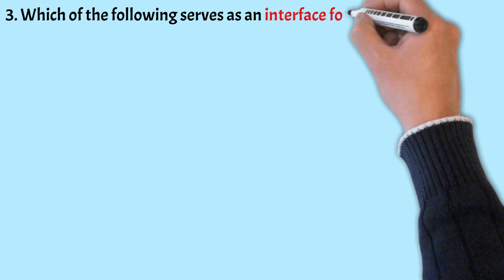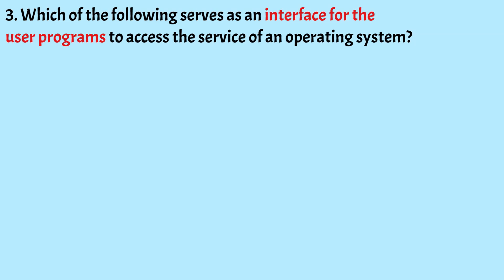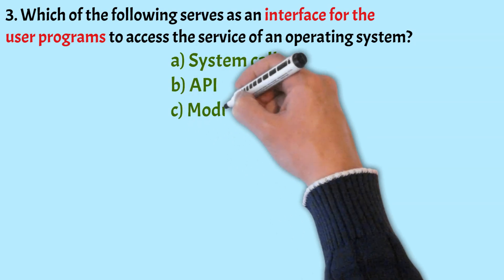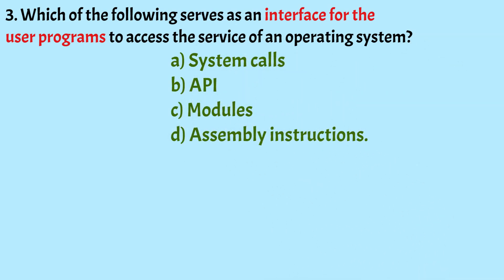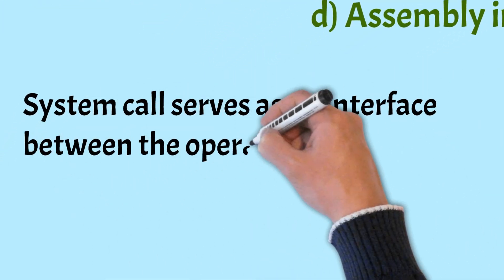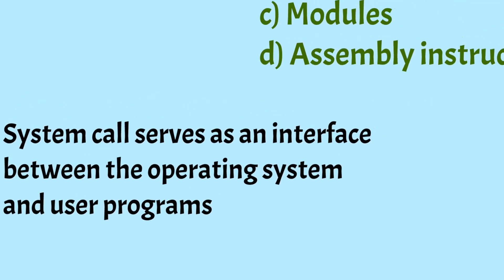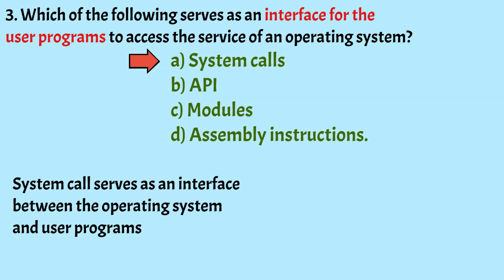Which of the following serves as an interface for user programs to access the services of an operating system? Options: System Calls, API, Modules, Assembly Instructions. The correct option is Option A, that is System Calls. System Calls serve as an interface between the OS and user programs. When a user program needs to access the OS's kernel, it makes a System Call, and the kernel can only be accessed using System Calls.